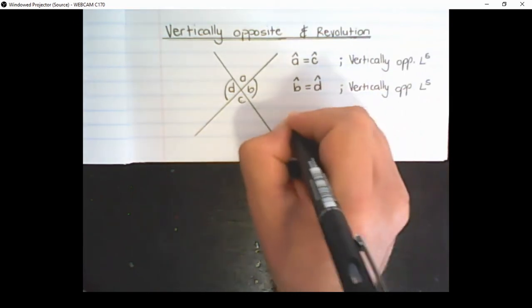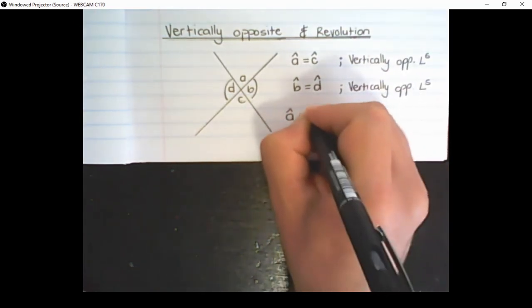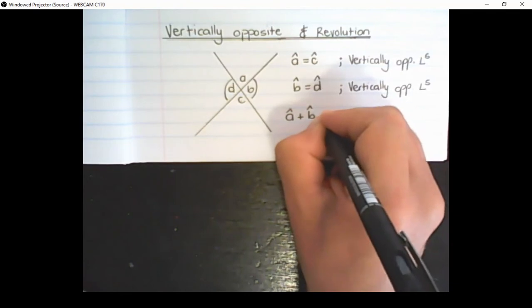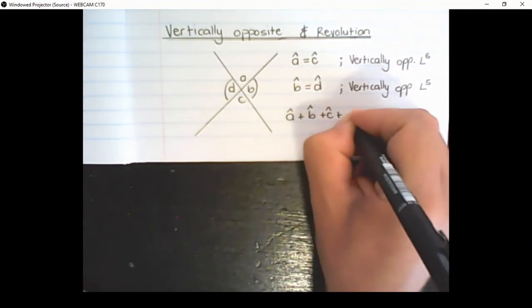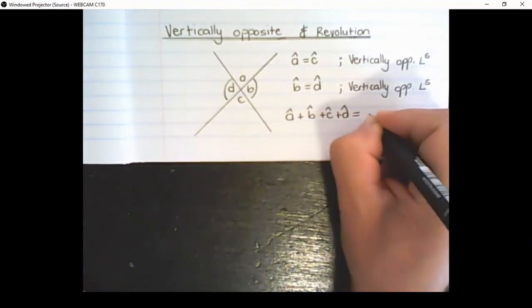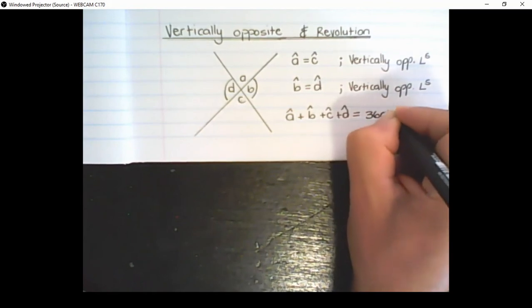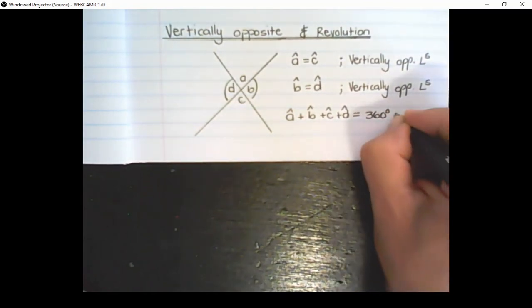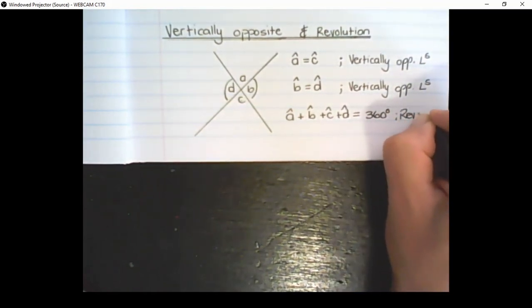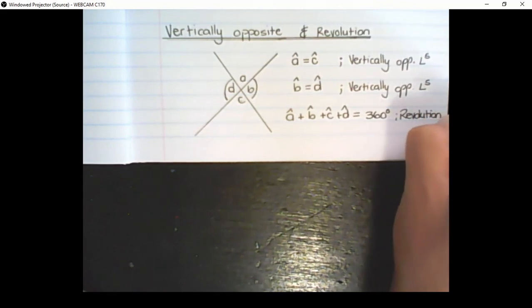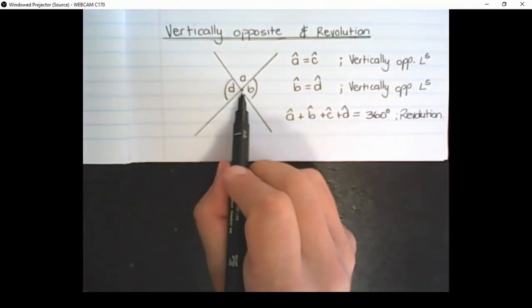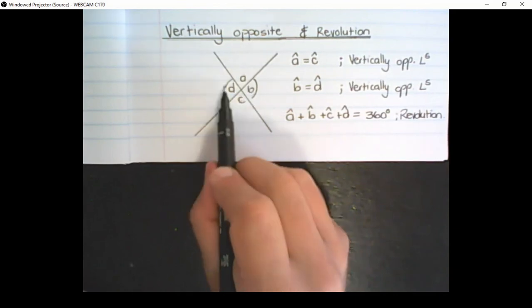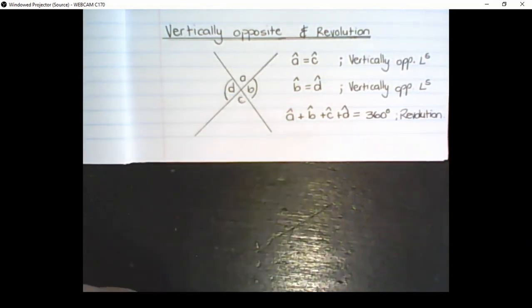And the last one is I can say angle A plus angle B plus angle C plus angle D is equal to 360 degrees. And the reason is it's a revolution. So angles around a point add up to 360 degrees.